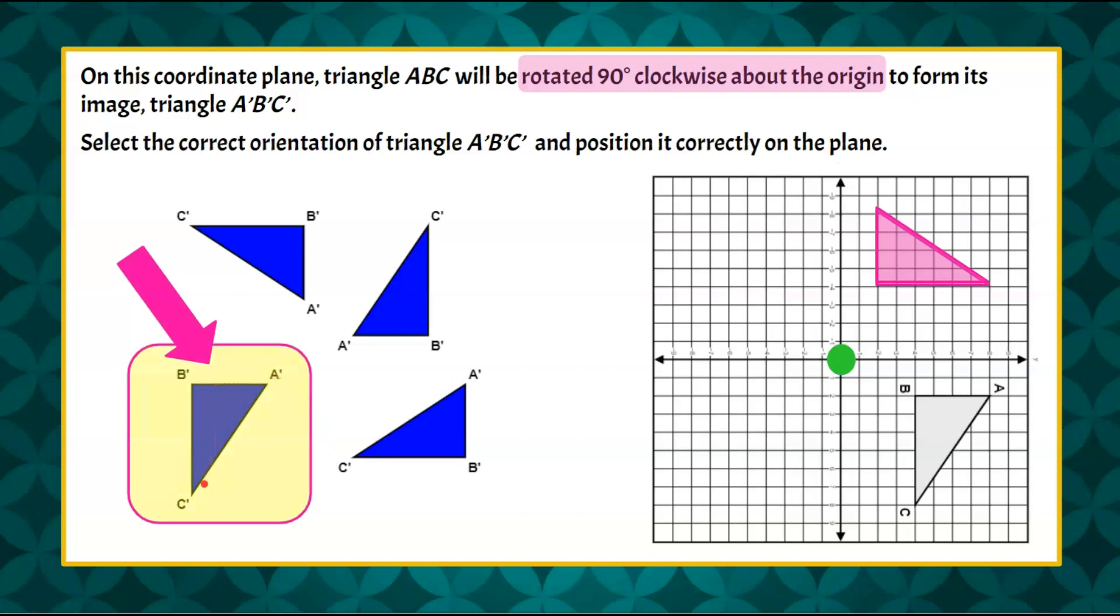A'B'C' will be this image. So this is the image that you would take and slide over to this point on the coordinate plane.